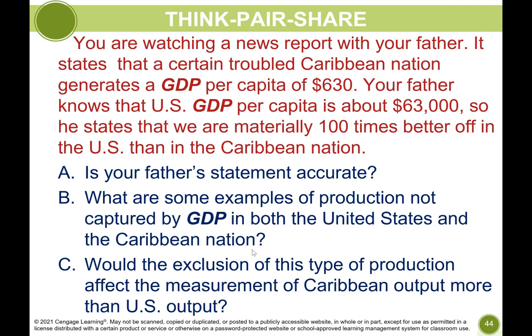Think, pair, and share. You are watching a news report with your father. It states that a certain troubled Caribbean nation generates a GDP per capita of $630. Your father knows that U.S. GDP per capita is about $63,000, so he states that we are materially 100 times better off in the U.S. than in the Caribbean nation. Is your father's statement accurate? What are some examples of production not captured by GDP in both countries? Would the exclusion of this type of production affect the measurement of Caribbean output more than U.S. output?